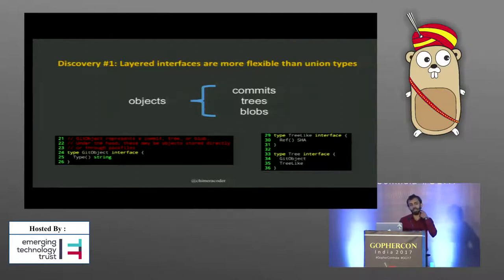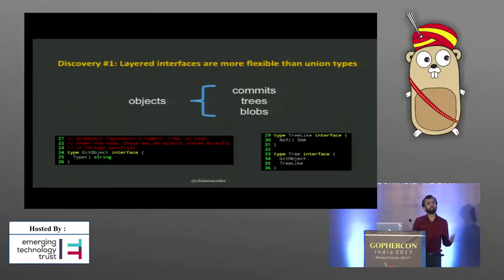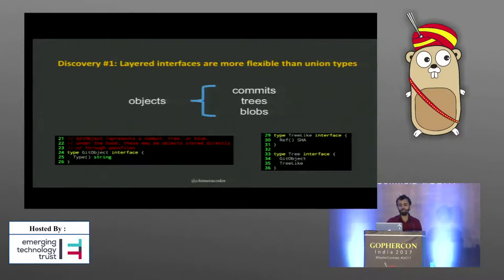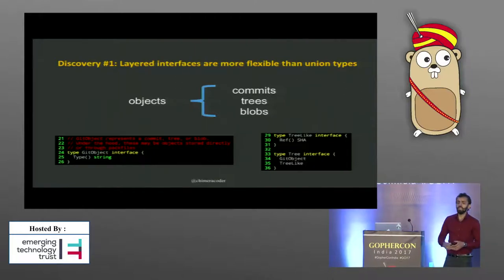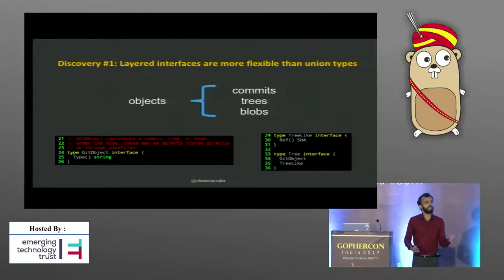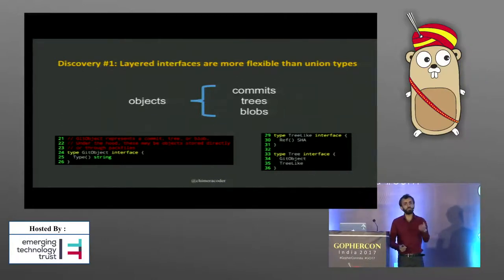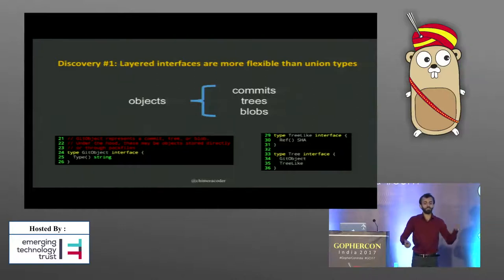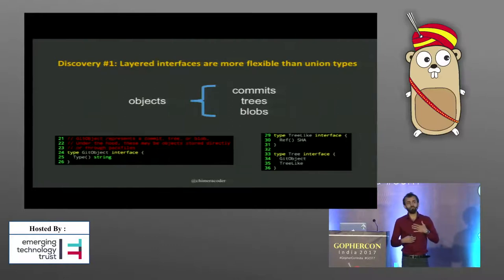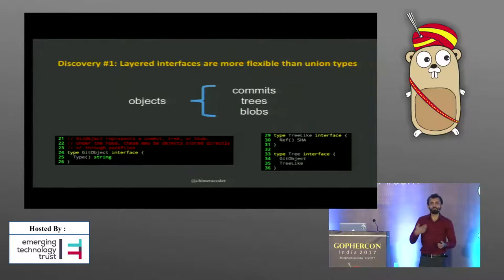Interfaces mean we can parse objects not based on what they are, but based on how they behave. By layering them, we can do this in stages. That's similar to how the IO interfaces work in the standard library — you have readers, writers, and seekers, and some types might implement all three or only one or two. In GitGo, we have the Git object interface, the tree-like interface which gives us anything that has a SHA, and the tree interface which combines Git object and tree-like. 'Tree-like' comes from Git's own internal concept of 'tree-ish.'